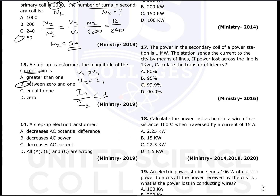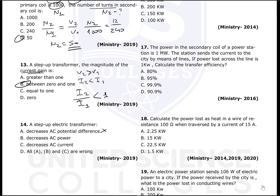Question 14: A step-up electric transformer — which option is correct? It does not decrease AC potential difference (step-up increases it). It does not purposely decrease AC power (though some loss occurs). The correct answer is C: a step-up transformer decreases the AC current. That is its primary function.